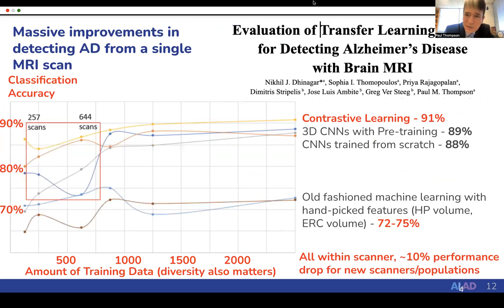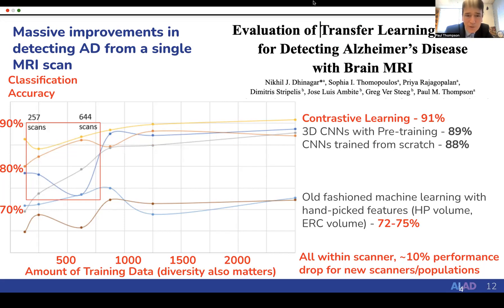What we're also learning, in a recent paper by Nikhil Dinargar in our group, is that the performance—although excellent at 91% for detecting Alzheimer's disease, representing massive improvements over old-fashioned machine learning using hand-picked features—can drop a little bit when applied to data coming from different scanners and different populations. We'll talk about how to make sure methods work more universally.